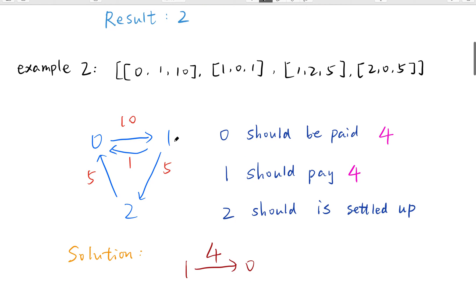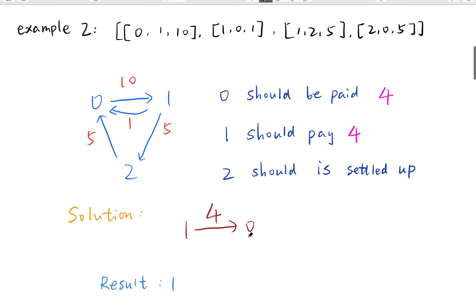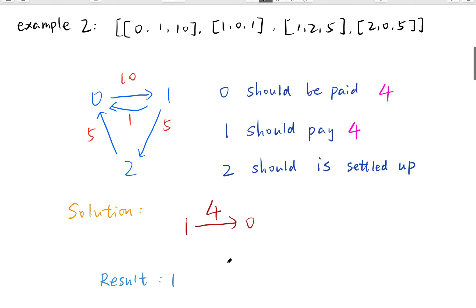In the same way, we calculate that person 1 should pay four dollars because he received four dollars more. For person 2, he received five dollars and he paid five dollars, so in total he is already settled up. We do not need to do any transactions for this person. In the end, we just need to let 1 pay four dollars, and all the people are settled up. So the result is just one — we only need to do one transaction.